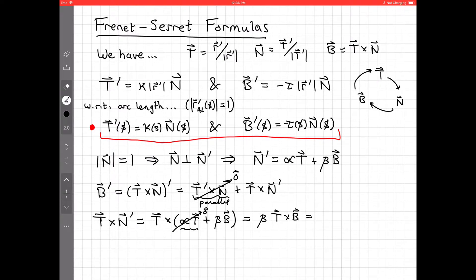So if you fight the circle, right, we're going from t to b, we end up with negative n. So this is negative beta times n.